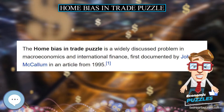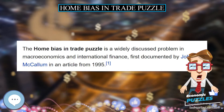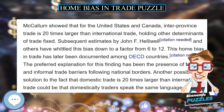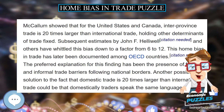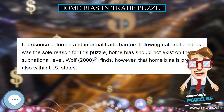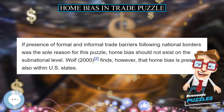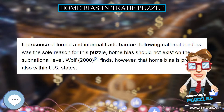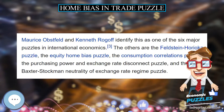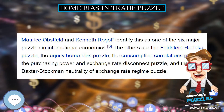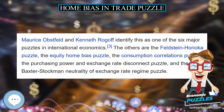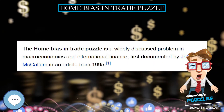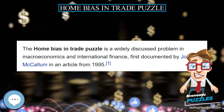The home bias in trade puzzle is a widely discussed problem in macroeconomics and international finance, first documented by John T. McCallum in an article from 1995. McCallum showed that for the United States and Canada, inter-province trade is 20 times larger than international trade, holding other determinants of trade fixed.